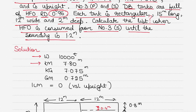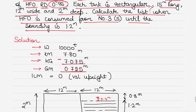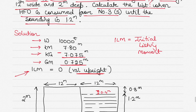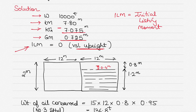To summarize what is given: displacement is 10,000 tons, KM is 7.8 meters, KG is 7.075 meters. We can find the initial GM by subtracting KM minus KG, giving GM = 0.725 meters. Since the vessel is initially upright, the initial listing moment (ILM) is zero.